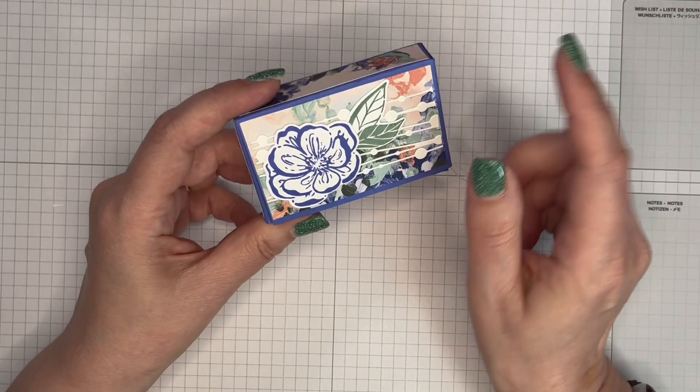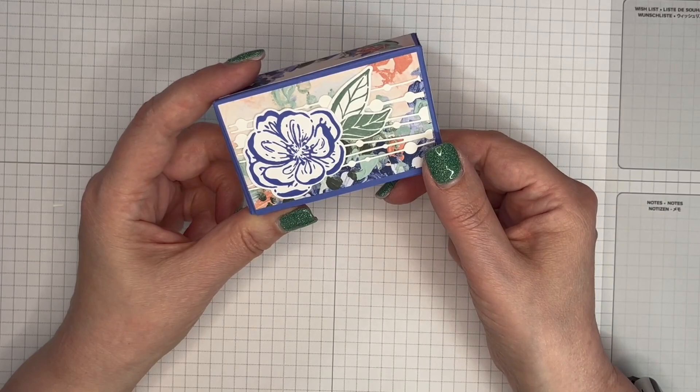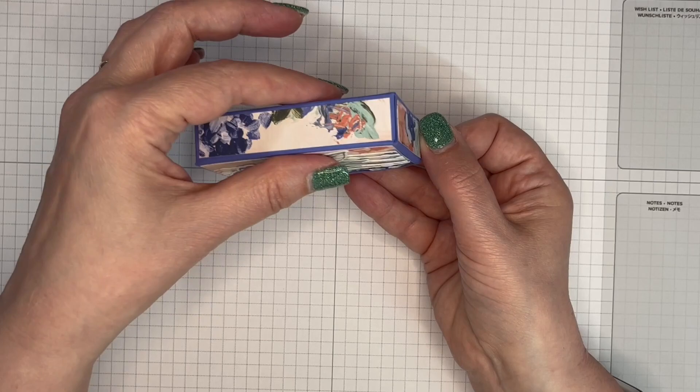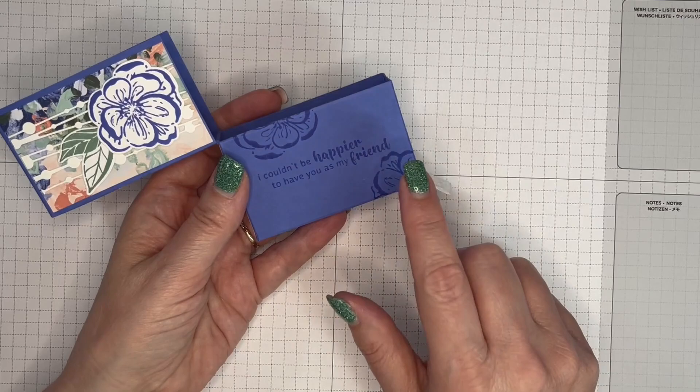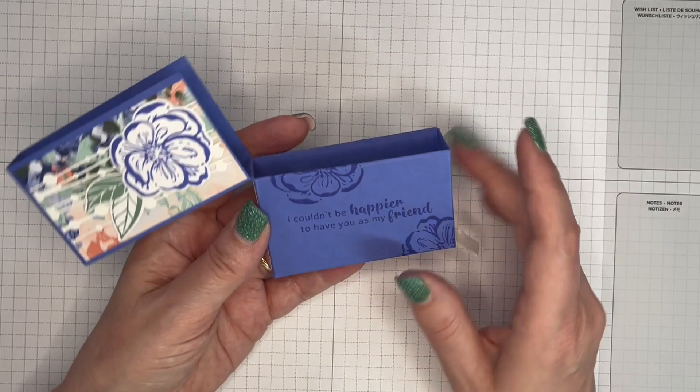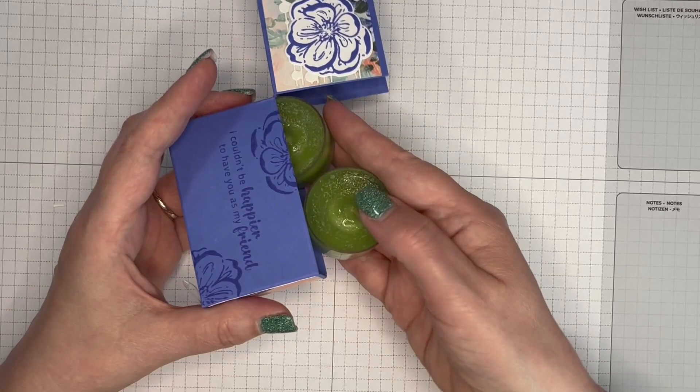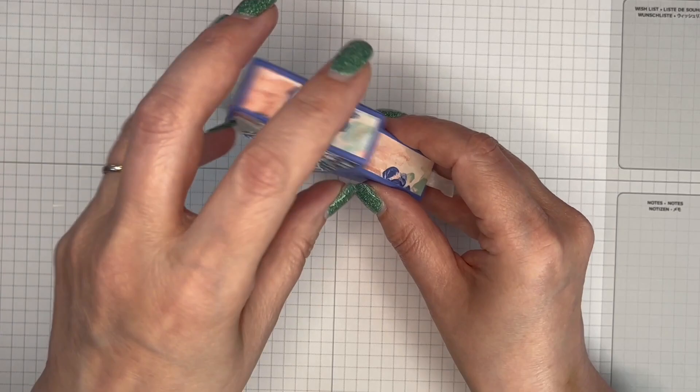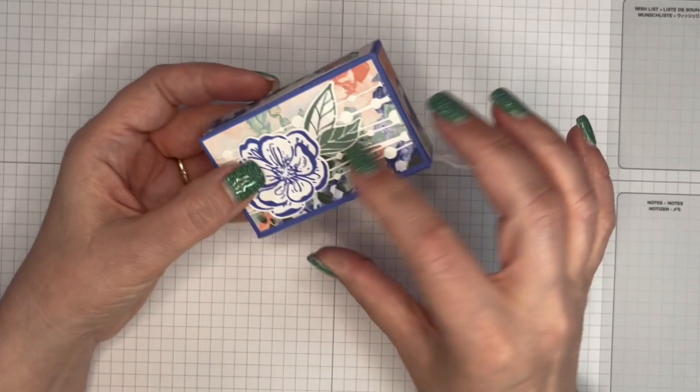I've used the Fancy Flora designer series paper to decorate this fancy little box. I also used Irresistible Blooms dies and stamps to decorate it. It's a fancy box in that it opens like so, and I've got a little bit of stamping on there that was an afterthought. I'm going to show you how I managed to do that even after I had built the box.